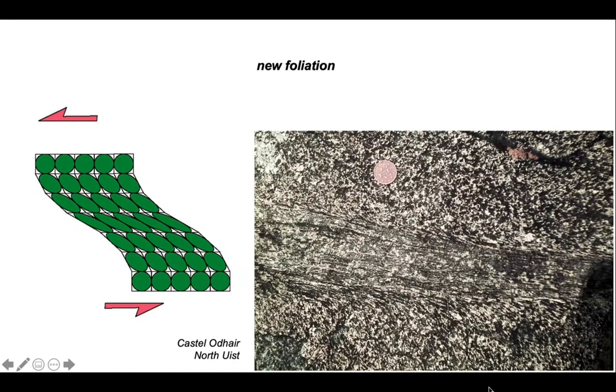Let's go back to this example from North US that we started our discussions with and do the same thing. First of all, we can identify the zone of the anisotropy of the shape fabric.